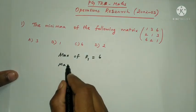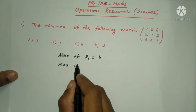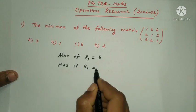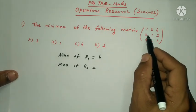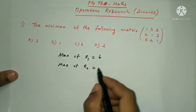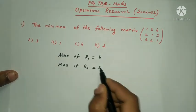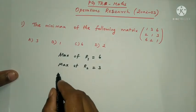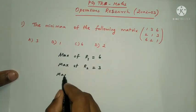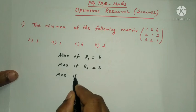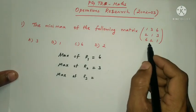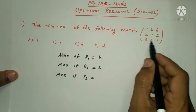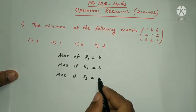Next, maximum of R2 — in the second row, the maximum is 3. Next, maximum of R3 — in the third row, the maximum is 6.